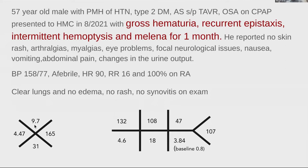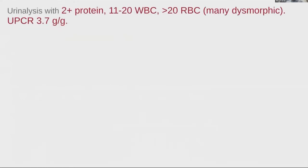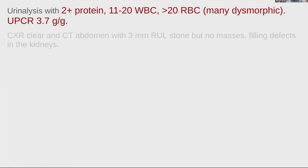He was mildly anemic with a hemoglobin of 9.7 and his creatinine was 3.84, up from a baseline of 0.8. He had blood and protein in urine, and a lot of the red cells were dysmorphic. He had 3.7 grams per gram protein-to-creatinine ratio on a spot sample. Imaging was clean except for a 3 mm right upper lobe stone.